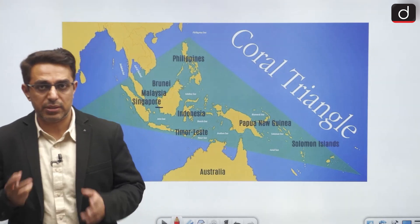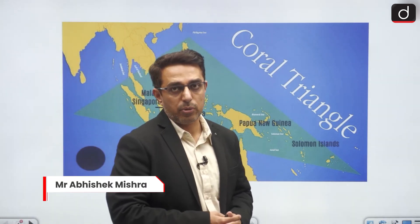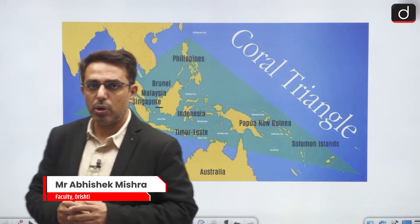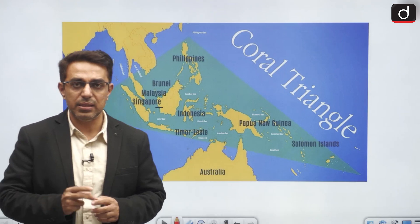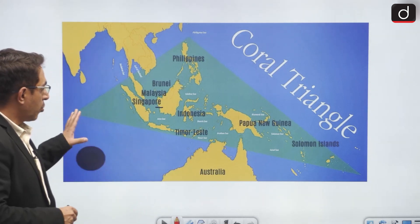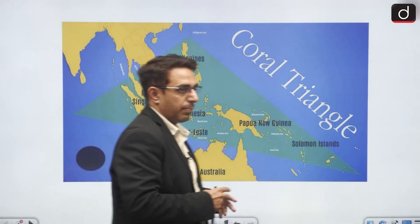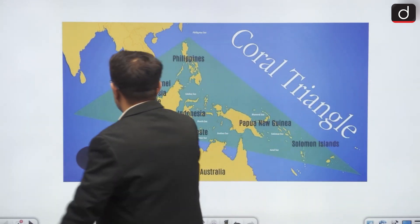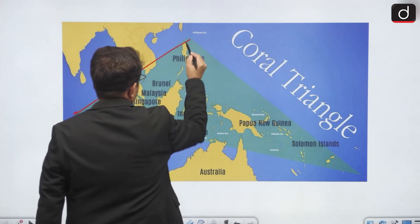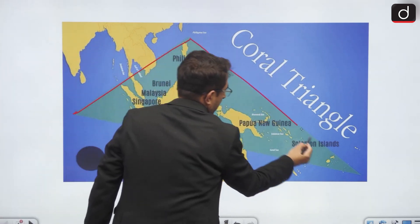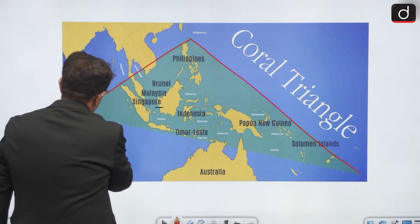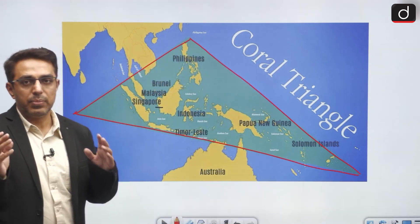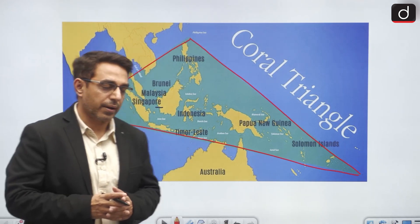Now let us look at the topic which is again in news, and that is about the Coral Triangle. The first thing we should know about any such place is its location. The Coral Triangle — we can see the location here on the map. It is located in Southeast Asia. This is an area which is rich in corals and it forms a kind of triangle, and because it is rich in corals, it is referred to as the Coral Triangle.